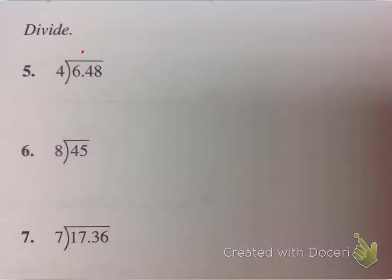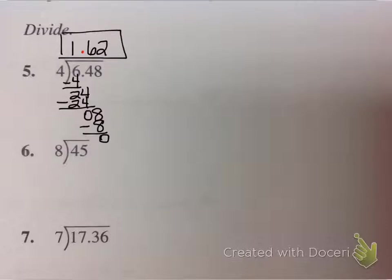So 4 divides into 6 one time, 1 times 4, subtract, bring down the 4, 4 goes into 24 six times, multiply, subtract, bring down, 4 goes into 8 twice. So it looks like our answer is 1 and 62 hundredths.